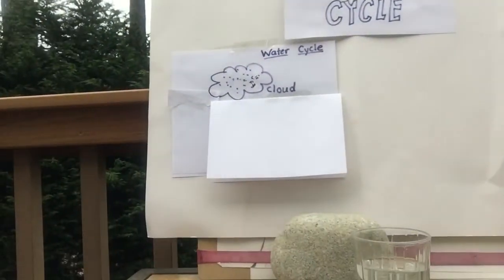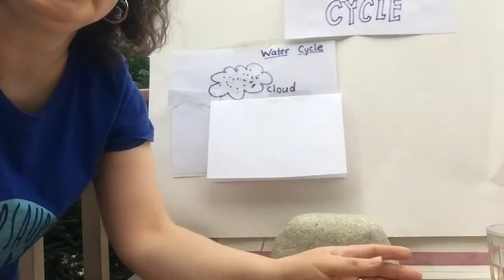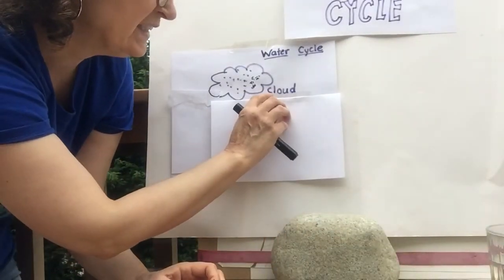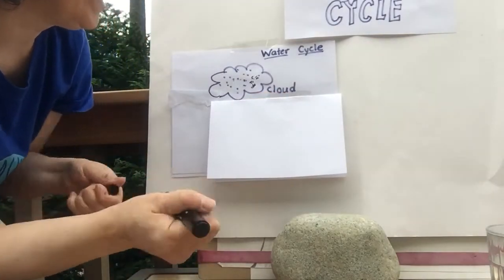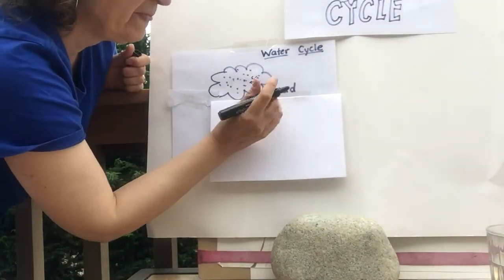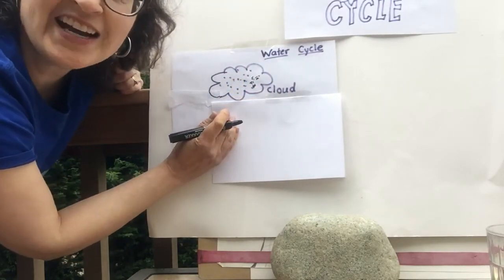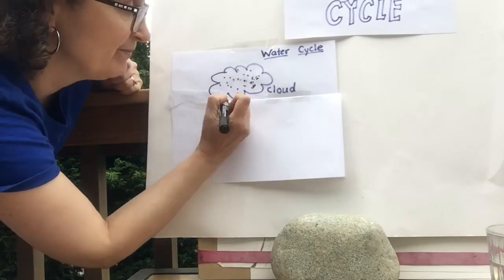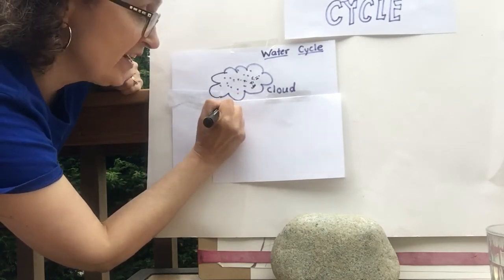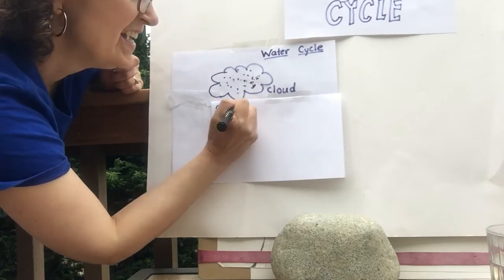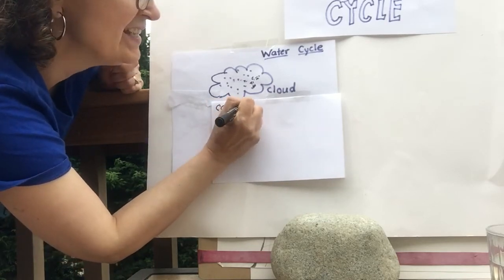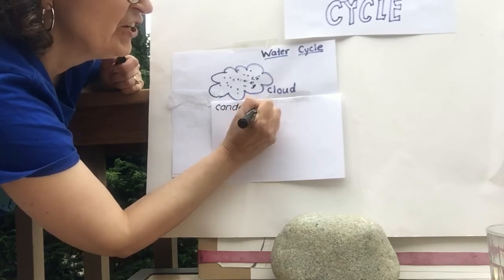Just like the wheel on a bike goes around and around — a cycle. So we talked about the top of the cycle here, and everybody drew a picture of a cloud. Now, clouds have a scientific word I want to teach you today: it's called condensation. Let's say that — con-den-sa-tion.